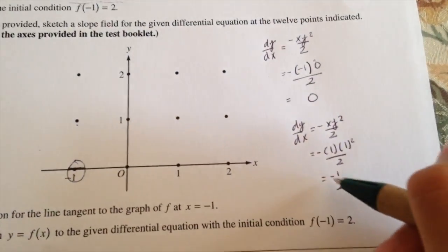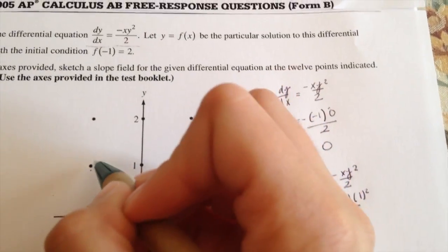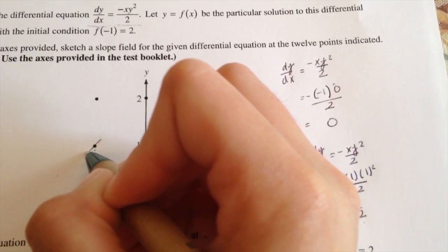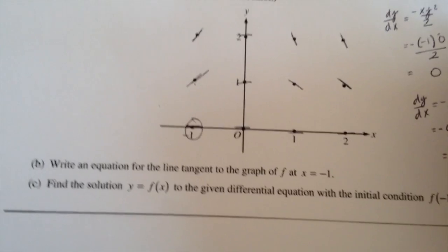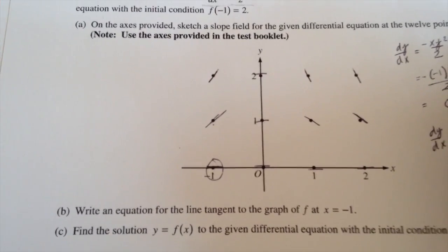So then you just, because it's a negative slope field, it's going downwards, so you can just go. And you do that for all of them. So once you're done, your slope field will look like this.